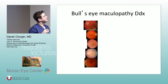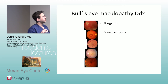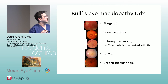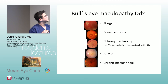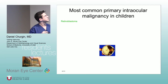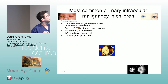Bullseye maculopathy differential: Stargardt's, cone dystrophy, chloroquine toxicity — which is treatment for malaria and RA — also hydroxychloroquine, AMD, and chronic macular hole. Most common primary intraocular malignancy in children: retinoblastoma.